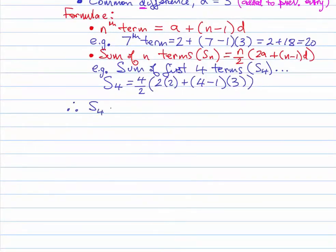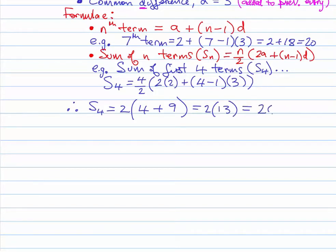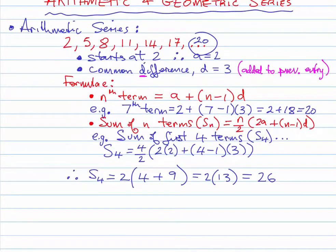Simplifying: four over two gives two. Two times four is eight, plus four minus one is three, times three is nine. So that's two times thirteen, which is 26. The sum of the first four terms is 26. Checking: two plus five is seven, seven plus eight is 15, 15 plus 11 is 26. Correct.